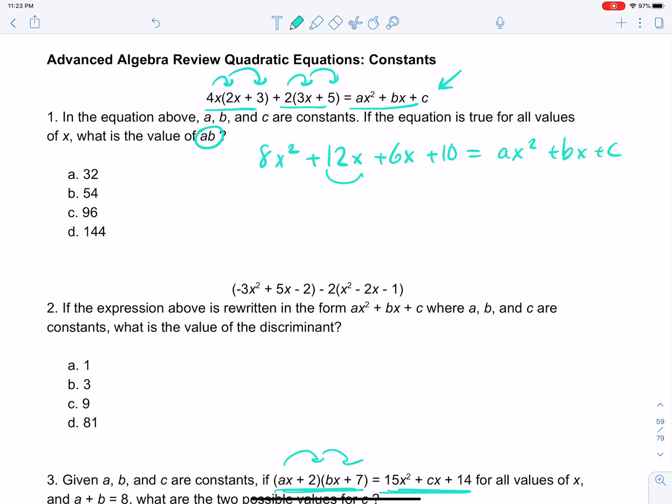And then all we have to do is combine like terms. So 8x² stays the same. 12x and 6x is 18x. And then we have 10 equals ax² + bx + c. This question is just about making sure that we understand the format, that we're writing this mess over here in this format.